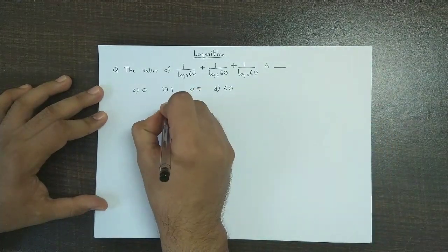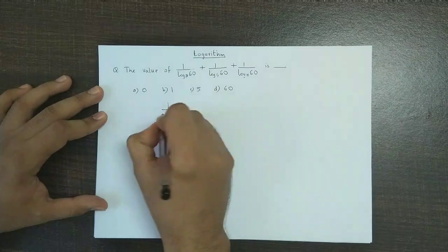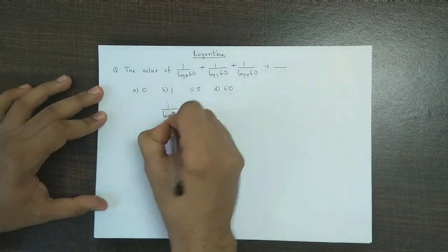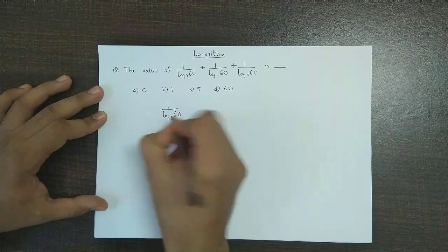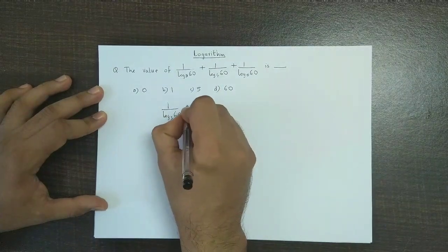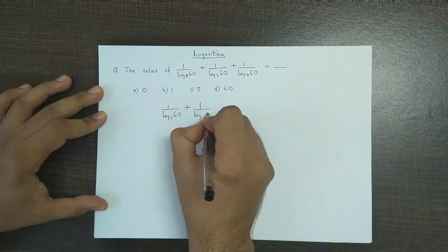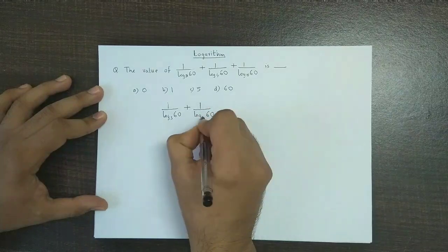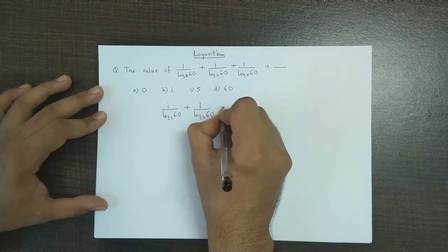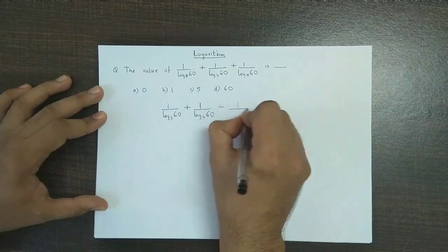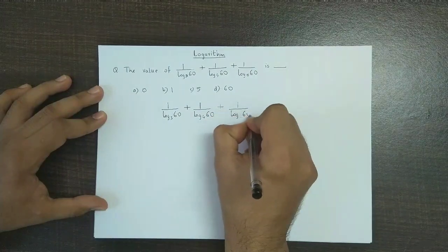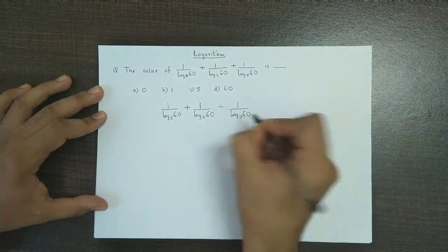So we have the expression as 1 upon log 60 to the base 3 plus 1 upon log 60 to the base 4 plus 1 upon log 60 to the base 5.